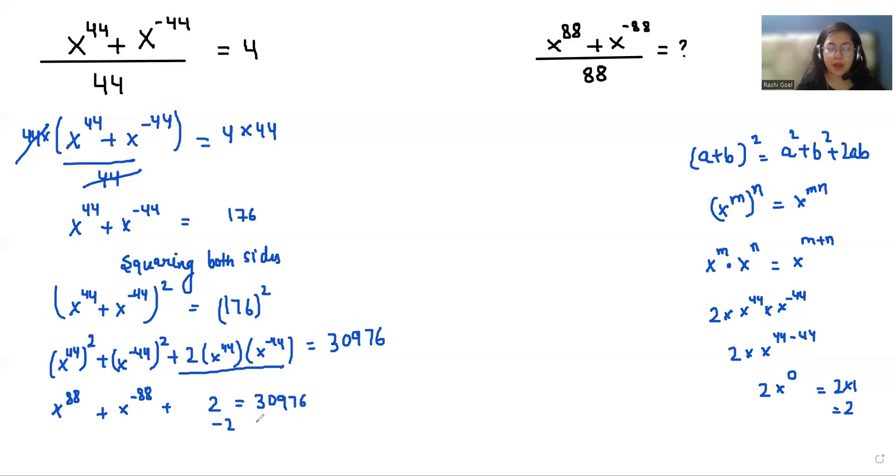Now both sides I am subtracting 2, so this gave us x power 88 plus x power minus 88 equals 30974.